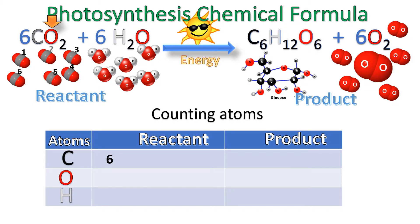The next step is counting the oxygen. The subscript tells us we're going to have two oxygen atoms for every molecule, and I need six of these — which is the coefficient. So six times two gives us twelve. Going through and counting the atoms: one through twelve. We take that 12 and put it where the O is.